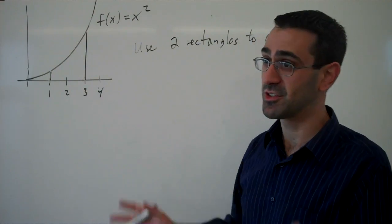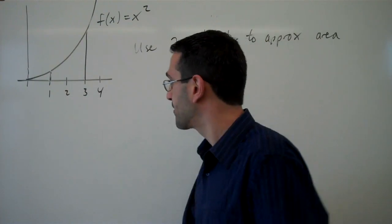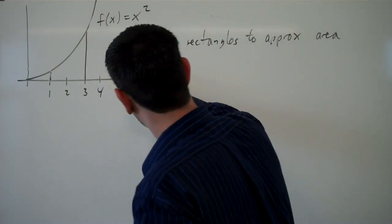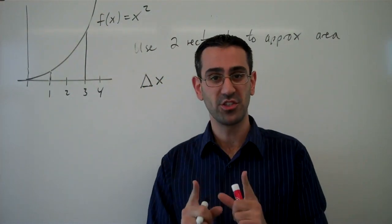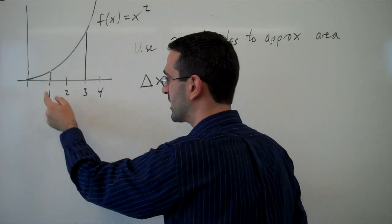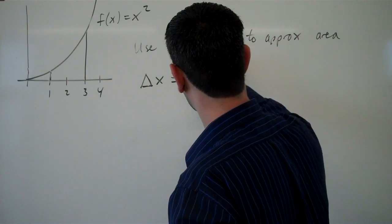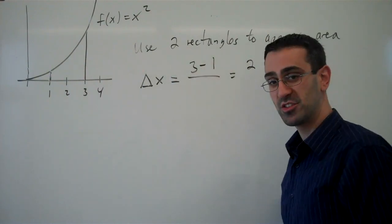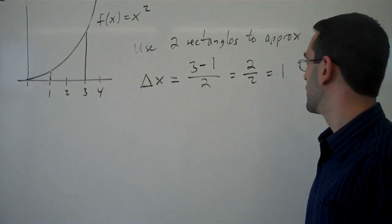There are many ways, but we're going to look at three different ways that we can set up our rectangles. First of all, from one to three, how wide are my rectangles going to be? We use delta x — that's a capital delta symbol — to represent the width of each rectangle. The total width of the interval is from one to three, that's a width of two: three minus one is two. Then to find the width of each rectangle, we divide by how many rectangles we have, which is two. So the width of each rectangle is going to be one.